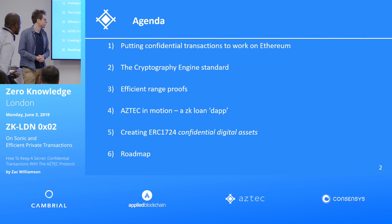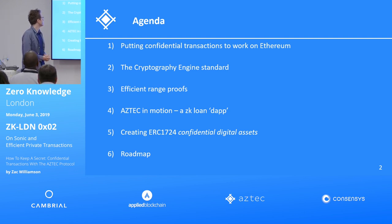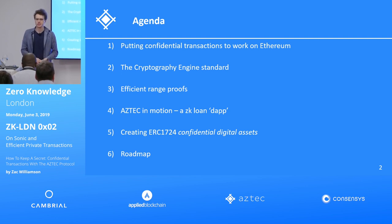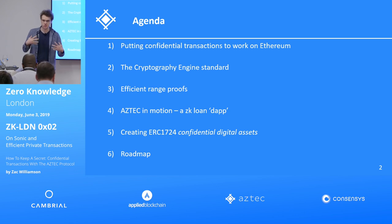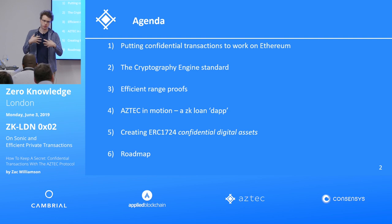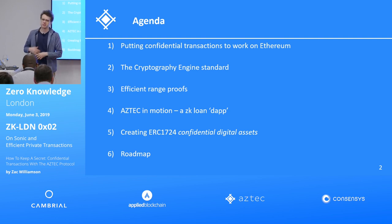This is a brief agenda of what I plan to talk about. Basically, what are the building blocks that you need to get confidential digital assets working on the Ethereum blockchain, and some of the software engineering constraints that this specific blockchain platform poses. Our attempts to solve them, particularly through our cryptography engine standard — a way of mediating multiple zero-knowledge proofs and how they interact. And how to create efficient range proofs, which is one of the fundamental building blocks of the Aztec Protocol.